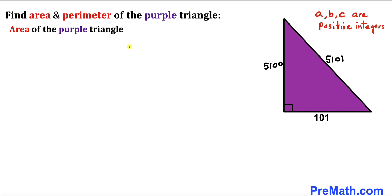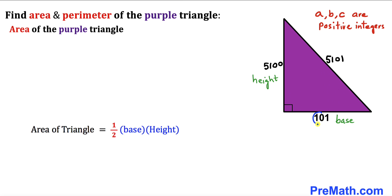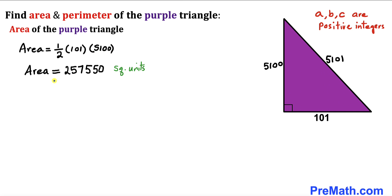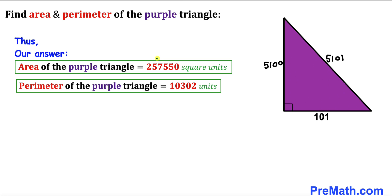Now let's calculate the area of this purple triangle. Recalling the area formula: Area = ½ × base × height. Our base is 101 and height is 5,100. So the area = ½ × 101 × 5,100, which simplifies to 257,550 square units. Thus the area of this purple triangle is 257,550 square units and the perimeter is 10,302 units.